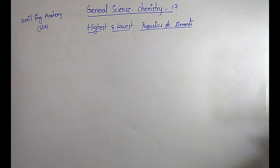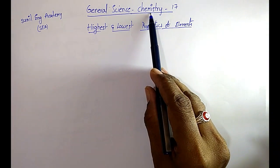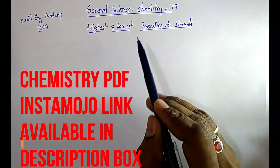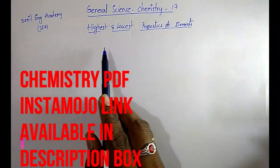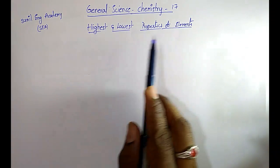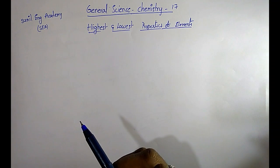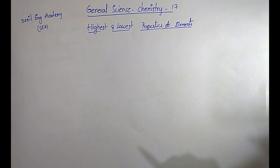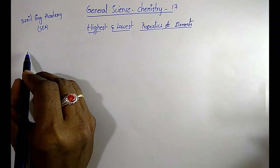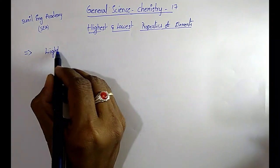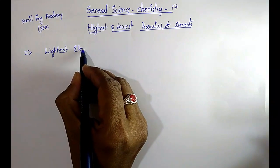Hi friends, welcome to Sunil Engineering Academy. I am Sunil. In chemistry, we have already completed 16 classes. This is class 17. In this class, I am going to discuss highest and lowest properties of elements — what is the lightest element, what is the heaviest element, what is the best conductor, and what is the most ductile element. This is a very important topic, so please listen carefully and note down all the points.